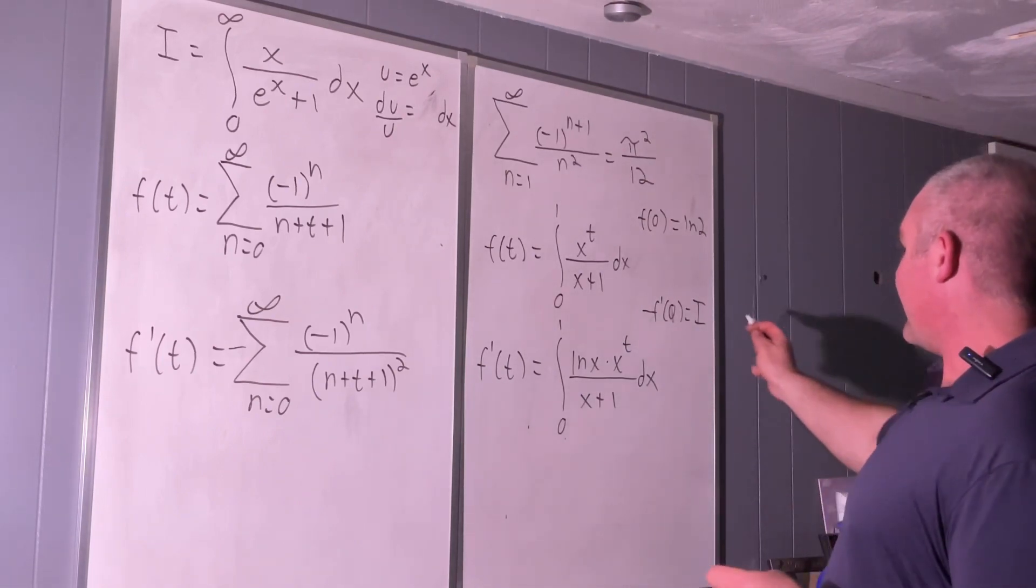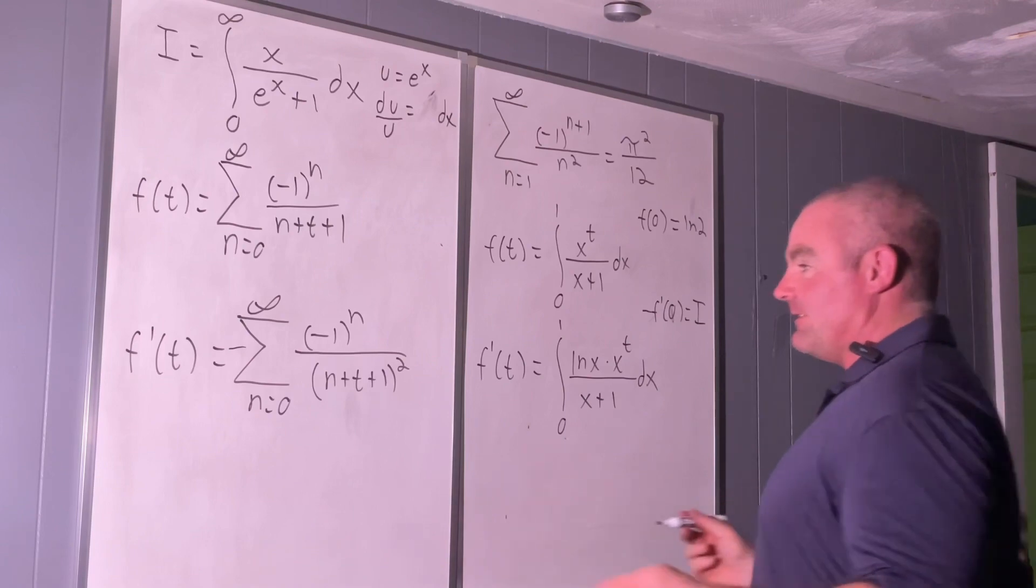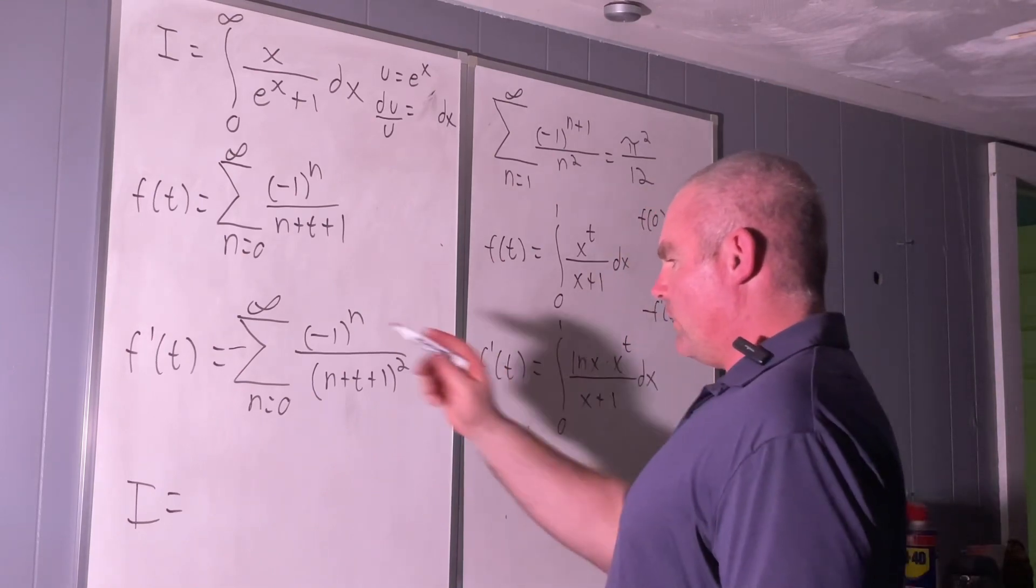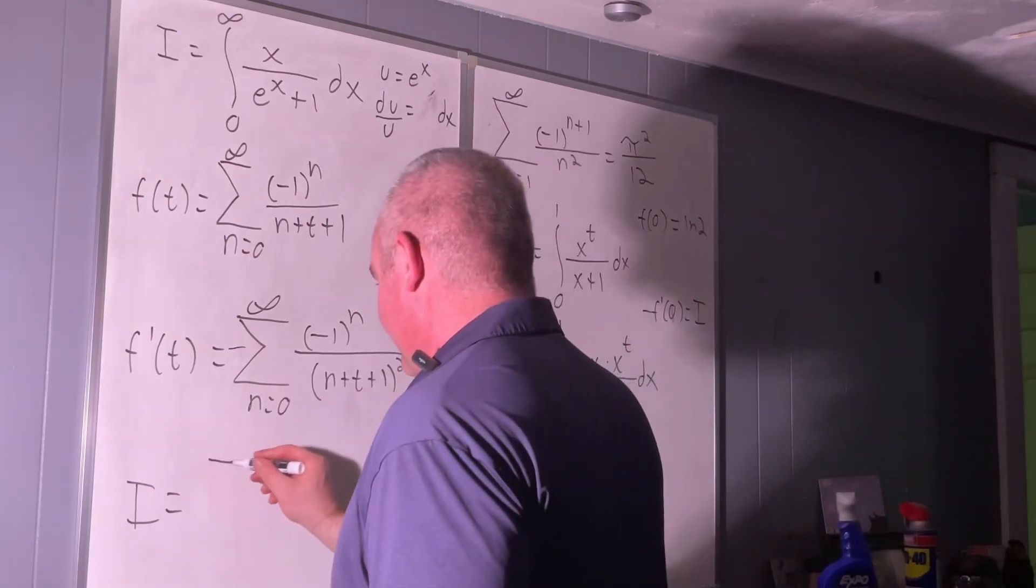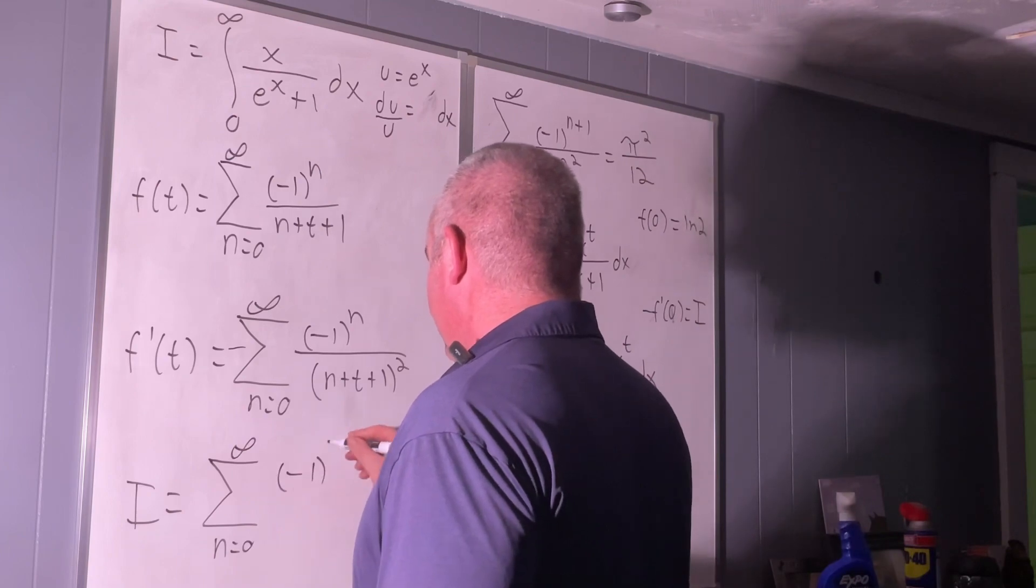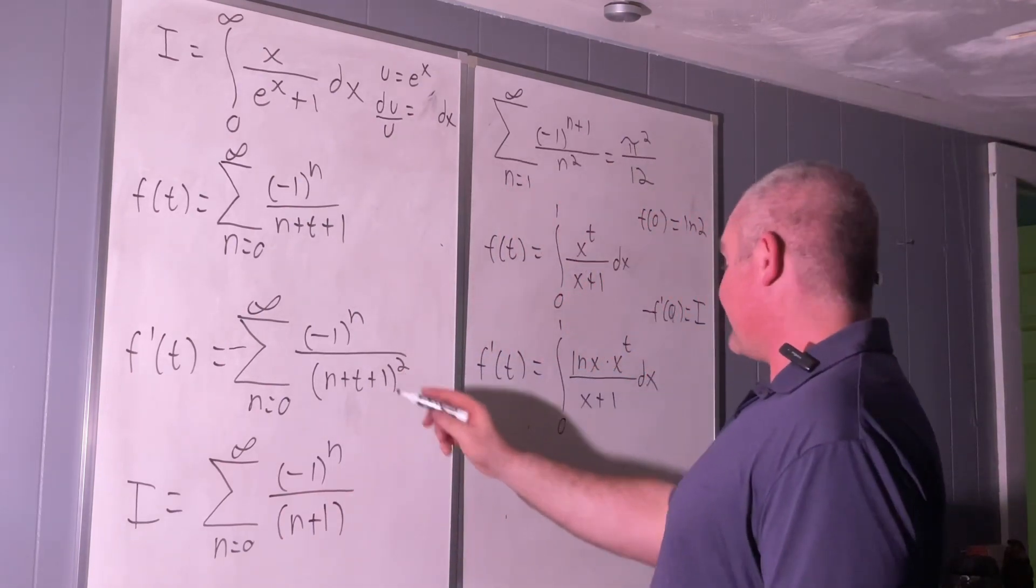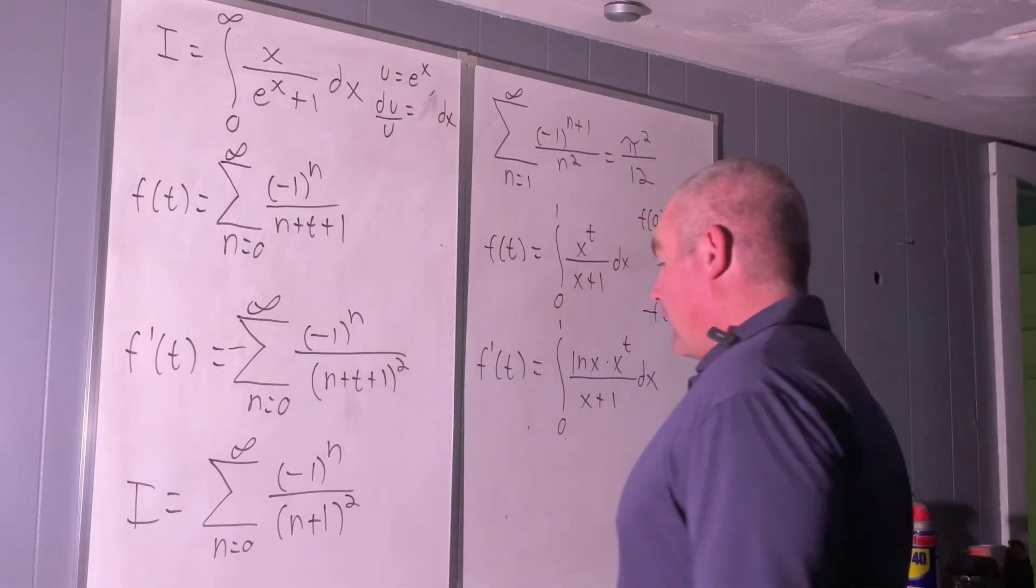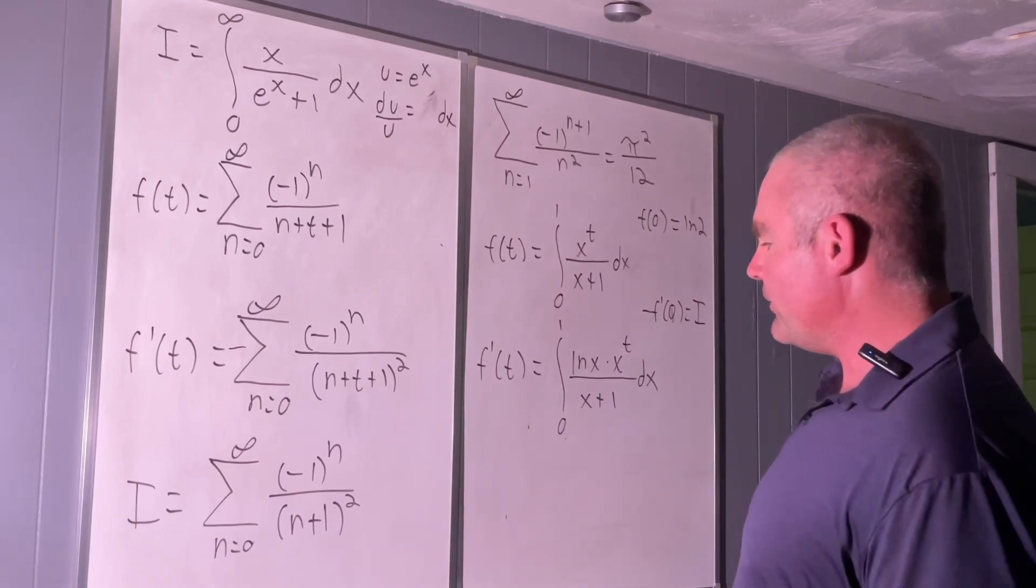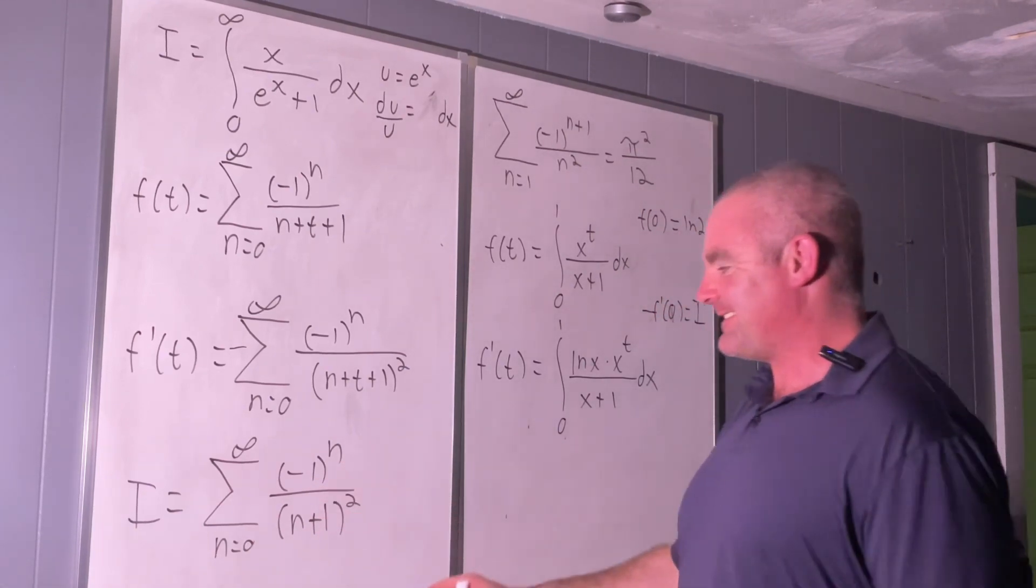All right. Now we can easily find I by plugging in zero to this expression right here and taking its negative. So I is going to be equal to, taking the negative, we'll just get rid of that negative sign. So we'll just have the sum from n equals zero to infinity of negative one to the n over n plus one, because we're taking t at the point zero and then all that squared. All right. We almost have this right here. So what we'll do is we will add one to the index and then subtract one from all our n's inside the sum. All right. So that'll be n going from one to infinity now, and then we'll have negative one to the n minus one, but that's really no different than negative one to the n plus one.